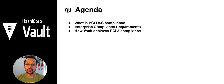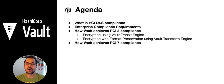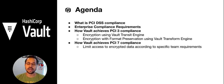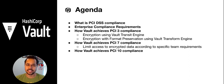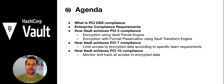Then we will look at how Vault does the compliance mapping for PCI 3 using the transit engine and transform engine. Then we'll look at how Vault helps with PCI 7 compliance using different teams and different access levels. Then we'll look at PCI 10 compliance — anything around card information that is stored should be tracked. We'll run through a scenario where an organization achieves PCI compliance and demonstrate how Vault helps them achieve that.